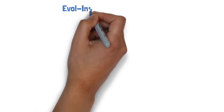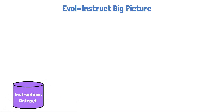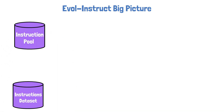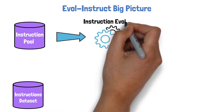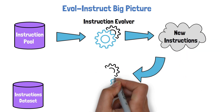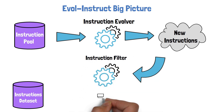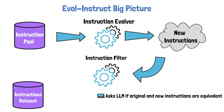Let's proceed to see what happens with the generated instructions by drawing a wider picture about the engine they built, called EvolveInstruct. We have an instruction pool, which at start contains the initial instructions. They are fed into a component called the Instruction Evolver, which is the part we just saw. It yields new instructions from the model. The new instructions are moved into another component called the Instruction Filter, that asks an LLM whether the old and the new instructions are equivalent, and if they are equivalent, then the new one is filtered out.